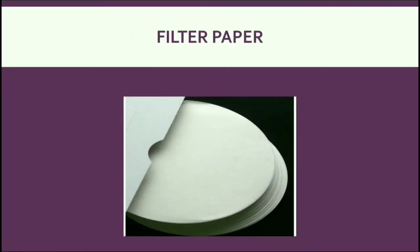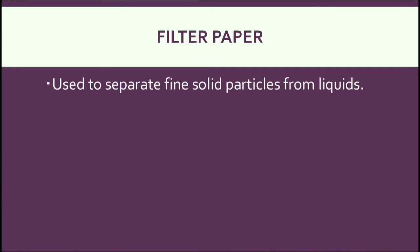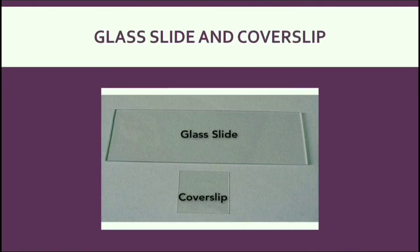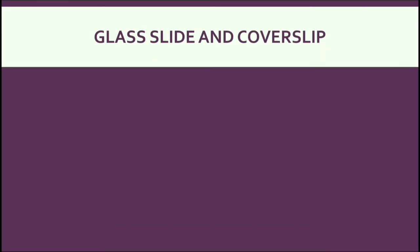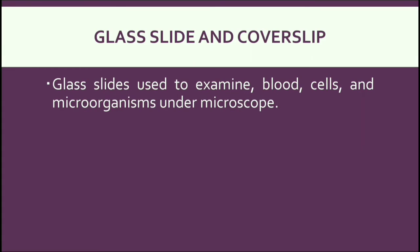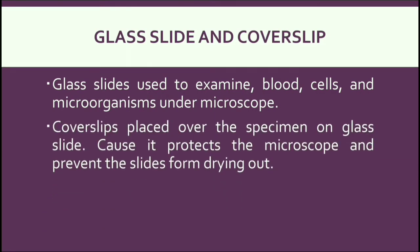These are filter papers — a semi-permeable paper barrier which is used to separate fine solid particles from liquid. Next, Glass Slide and Coverslip. These are thin and flat pieces of glass. Glass slides are used to examine blood, cells, and microorganisms under a microscope, and coverslips are placed over the specimen on a glass slide to protect the microscope objective and prevent the slide from drying out.